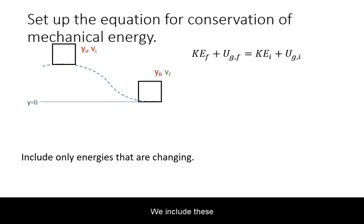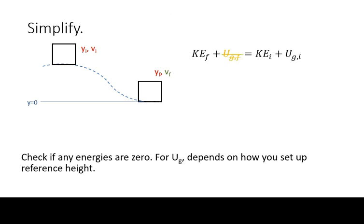We include these in our declaration of the conservation of energy equation. For gravitational potential energy, we can set up a coordinate system with a reference height of zero, such that the potential energy at the bottom of the hill is zero.